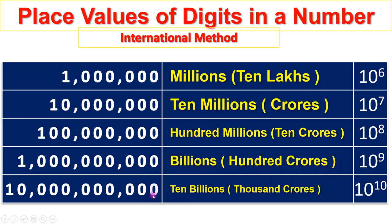Units, tens, hundreds, thousands, 10 thousands, 100 thousands, millions, 10 millions, 100 millions, billions, 10 billions, or 1000 crores. 10 to the power of 10.